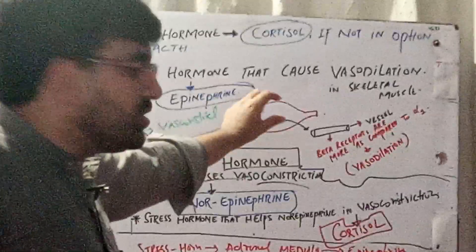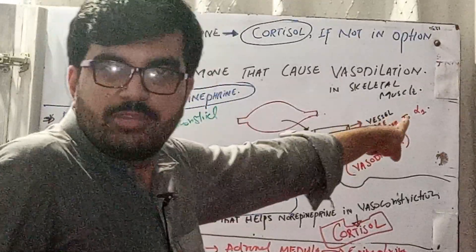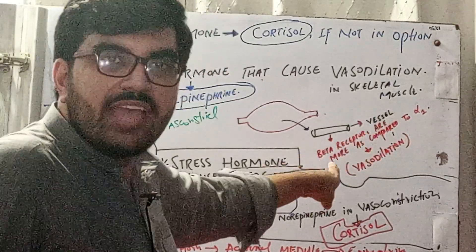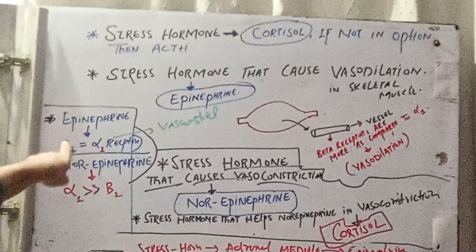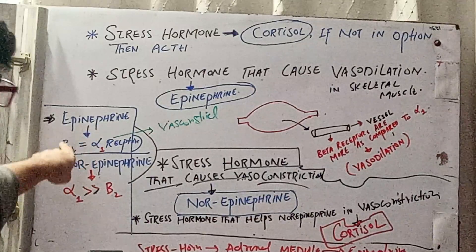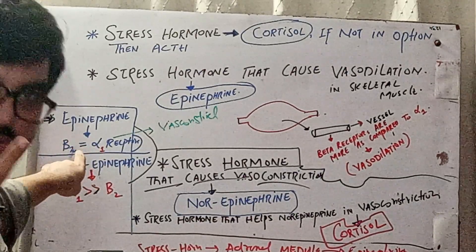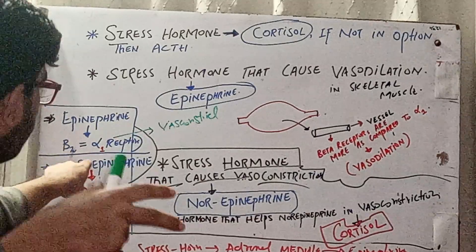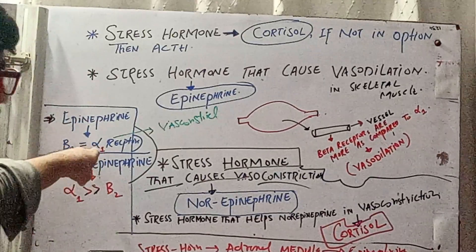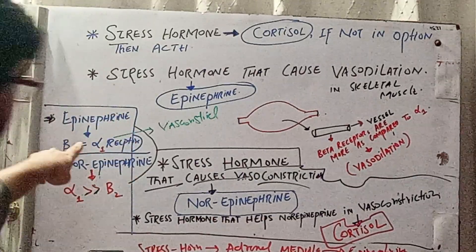Coming toward the basic concepts: if you look at blood vessels in skeletal muscle and examine the receptors, the beta receptors are more as compared to the alpha receptors. Epinephrine has equal action on both beta and alpha receptors. Now it depends upon the density of receptors — if there are more beta receptors than alpha receptors, there will be vasodilation. If there are more alpha receptors and fewer beta receptors, there will be vasoconstriction, because at alpha receptors epinephrine causes vasoconstriction, and at beta it causes vasodilation.